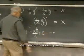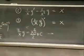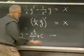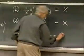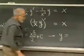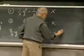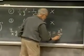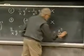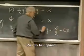The final step will be: therefore, I now want to isolate y by itself. So y will be equal to — multiply through by x — x cubed over two plus c times x. And that's the solution.